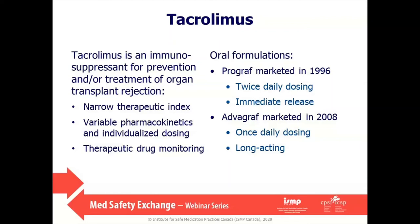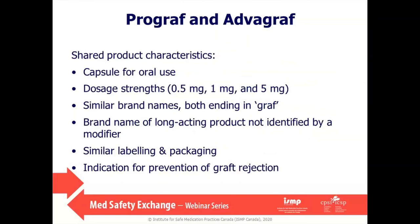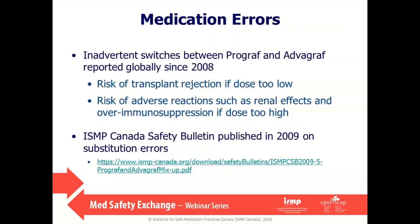There are shared characteristics between these two products: both are capsules, available in the same strengths, with similar brand names not differentiated by a modifier such as XR to identify the long-acting product. At market approval, labeling, packaging, and indication were also similar. These shared characteristics led to mix-up errors, some with serious consequences such as transplant rejections. In 2009, Health Canada received a case report of a mix-up in a Canadian post-transplant patient, and ISMP Canada issued an alert around the same time based on error reports.